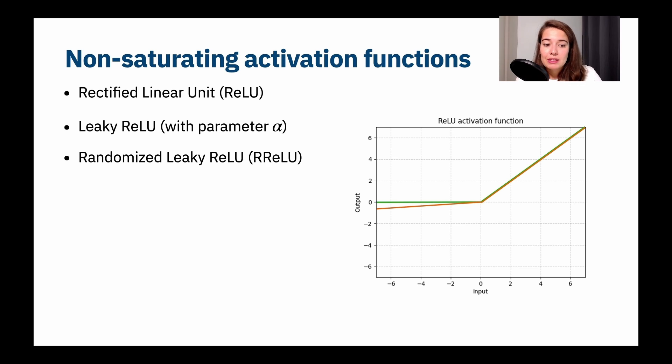But what they did, because they didn't like this, is to use randomized Leaky ReLU. So what they did is for the parameter alpha, you choose a random number and you keep that random number for your training.